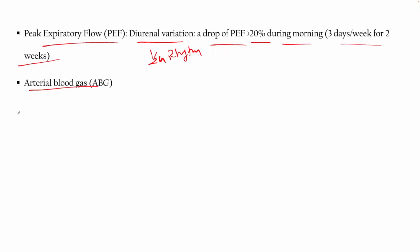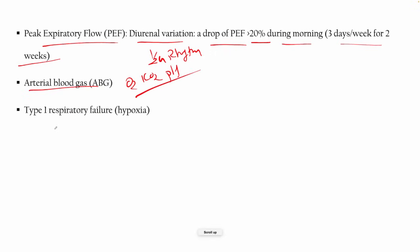You can also go for arterial blood gas (ABG), where you can find H2O2, CO2, and pH levels. You can check whether there is type 1 respiratory failure associated with hypoxia or not.